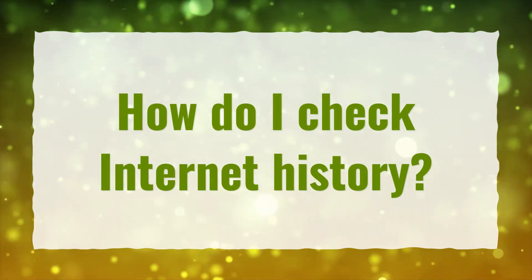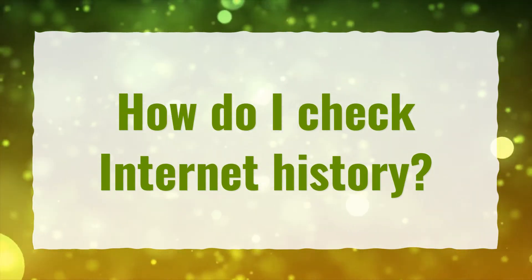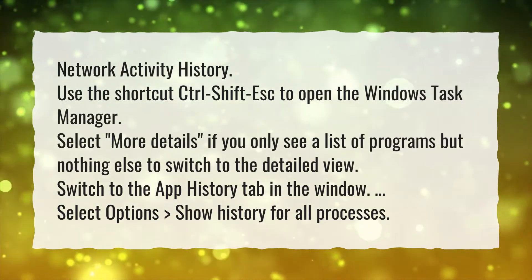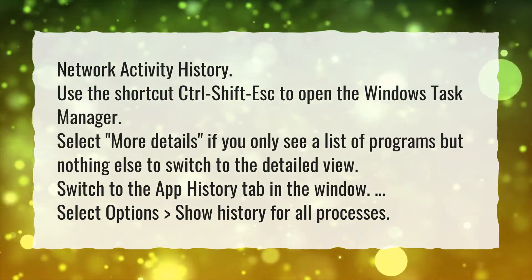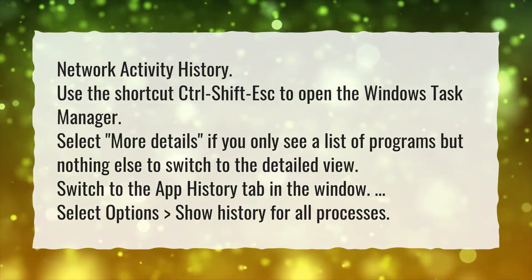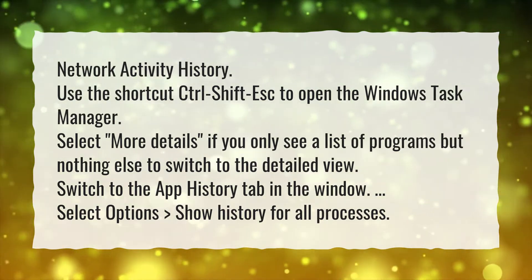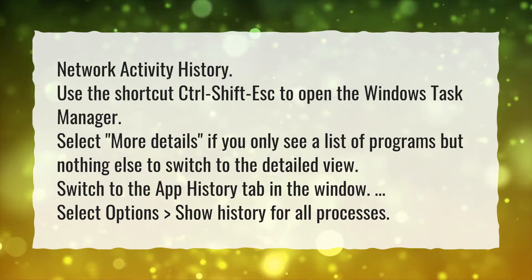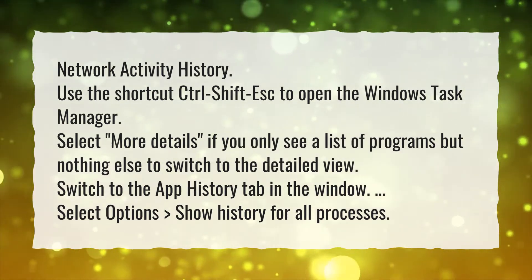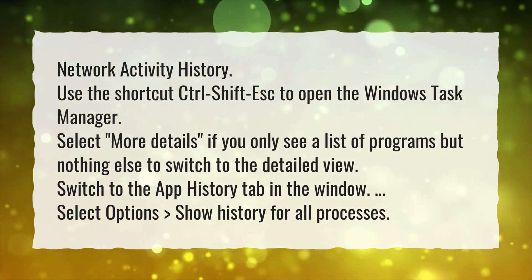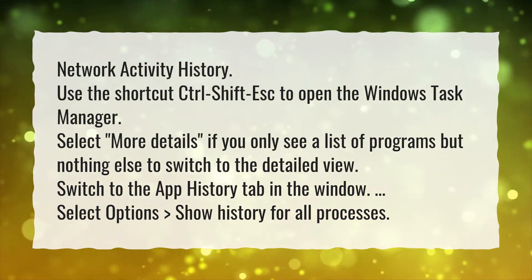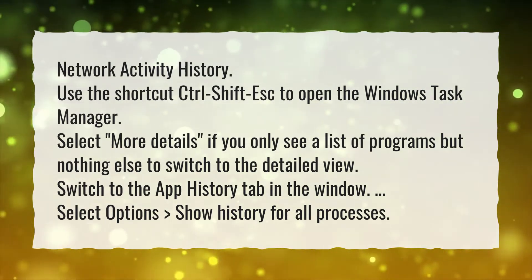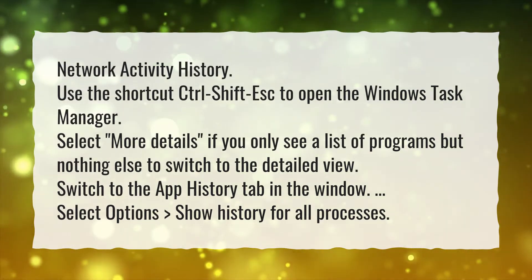How do I check internet history? Network activity history: use the shortcut Ctrl+Shift+Esc to open the Windows Task Manager. Select More Details if you only see a list of programs, to switch to the detailed view. Switch to the App History tab in the window, select Options, then Show History for All Processes.